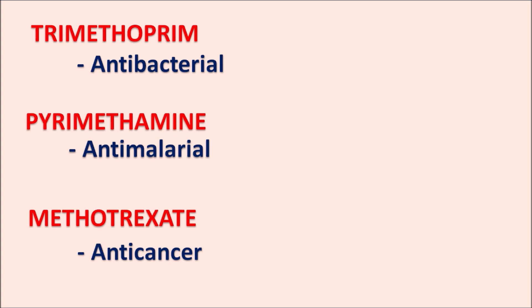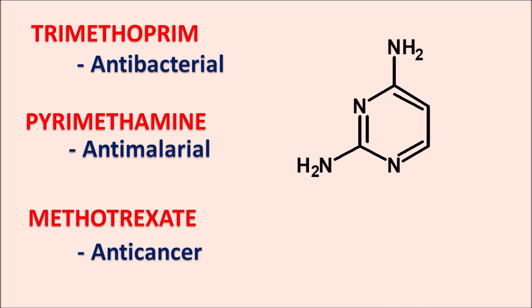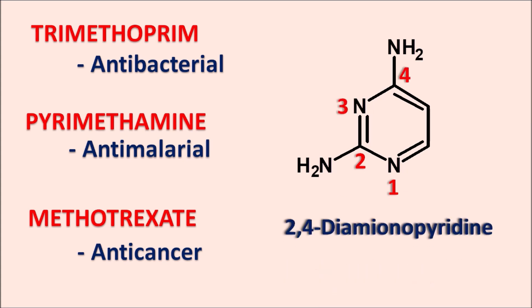Even though these drugs show some difference in their selectivity, they have some structural similarity — all of these drugs have a common structural moiety. This is the pyrimidine ring system, and it is a 2,4-diaminopyrimidine. This 2,4-diaminopyrimidine is present in all three structures, with a small modification in methotrexate. This 2,4-diaminopyrimidine ring is responsible for the binding of these drugs with the dihydrofolate reductase enzyme, which is responsible for inhibition of the enzymatic activity.